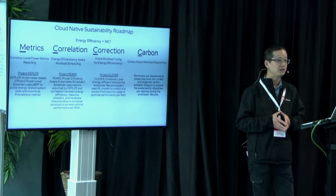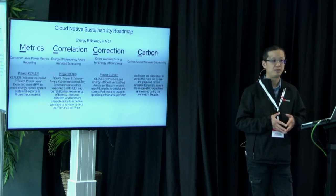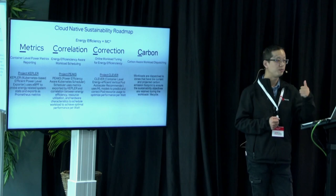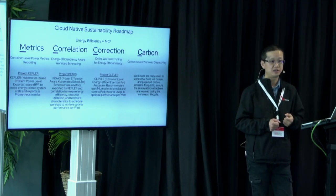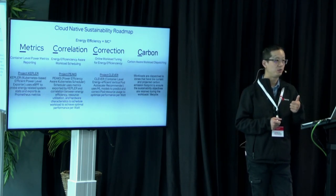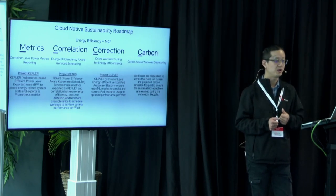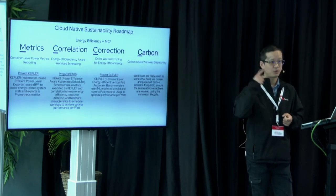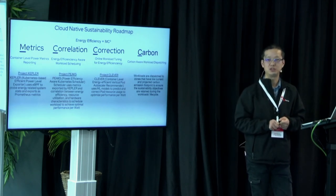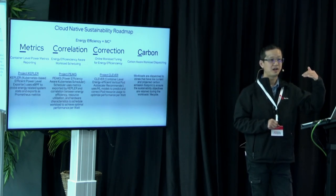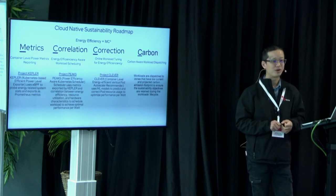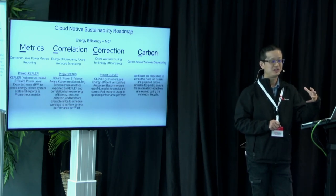The next project is called Correction, which we presented at last year's KubeCon. We are using the Kubernetes Vertical Pod Autoscaler (VPA) and coupling it with Kepler metrics — the power consumption metrics from workloads — and then dynamically tuning the CPU frequency. The key background here is that the higher the CPU frequency, the higher energy is consumed.